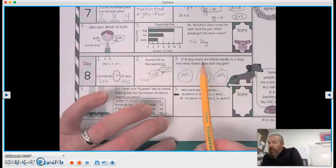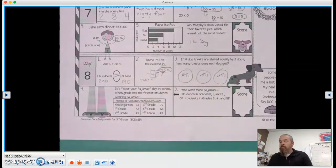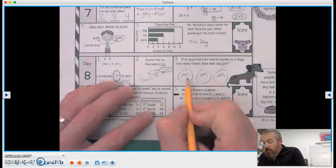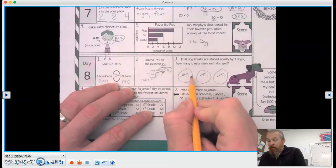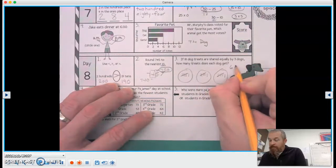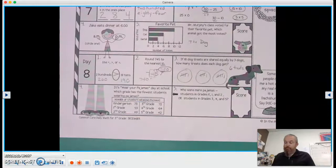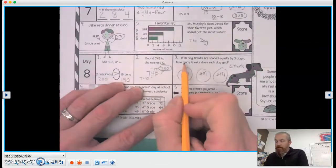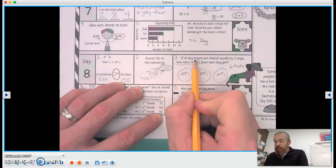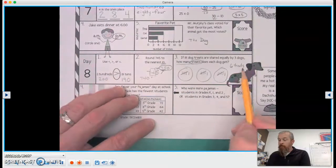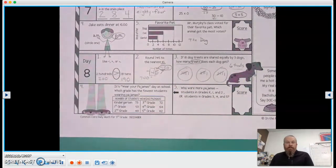If 18 dog treats are shared equally by three dogs, how many treats does each dog get? There's 1, 2, 3, 4, 5, and one more is six. So they get six treats. I always like that, how many, and you circle that next word. That's almost always our label. Six treats.